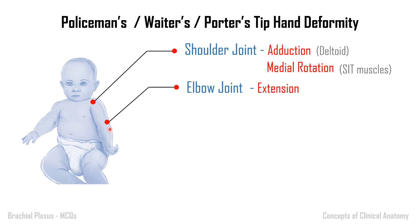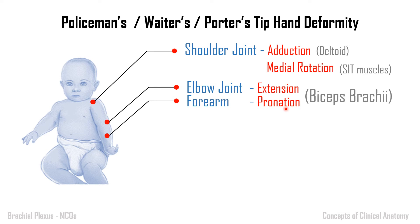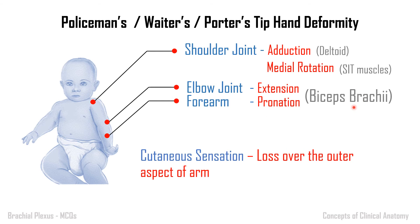At the elbow you can see extension, and at the forearm it is pronated. These two are due to paralysis of biceps brachii, also supplied by the musculocutaneous nerve with C5-C6 roots. When the musculocutaneous nerve is damaged, biceps is paralyzed. Biceps helps in flexion of the elbow and is also a powerful supinator of the forearm when the arm is semi-flexed.